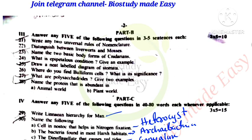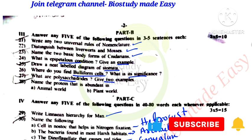Write any two universal rules of nomenclature. Distinguish between liverworts and mosses. Basic body forms of cnidarians are medusa and polyp. Epipetalous stamens are an example. Neat diagram of stomata. Bulliform cells. Polysaccharides. The most abundant protein in the animal world is collagen.